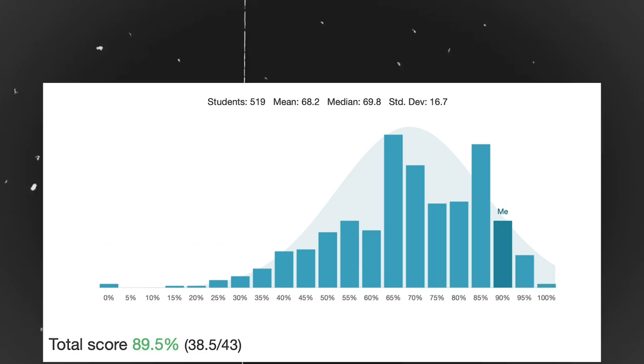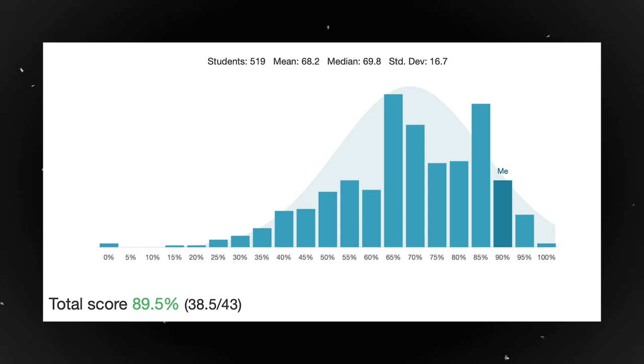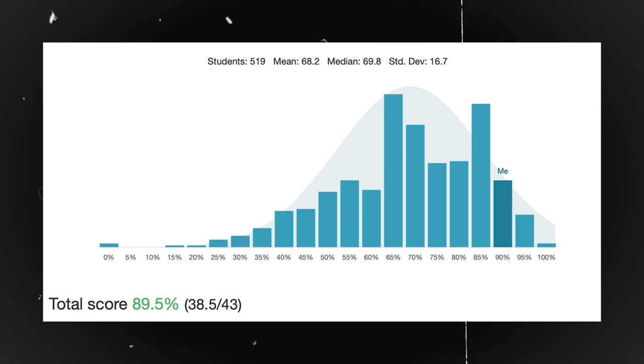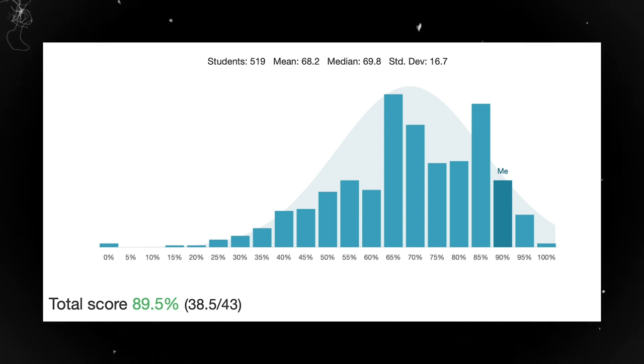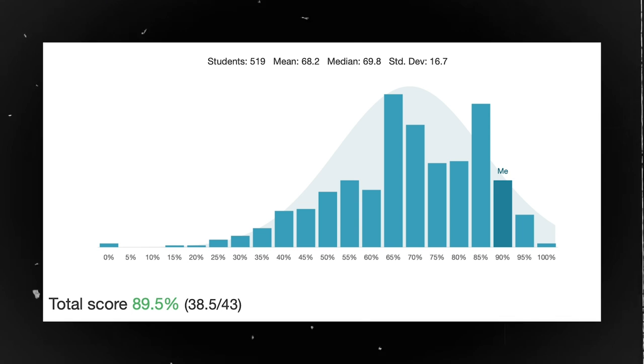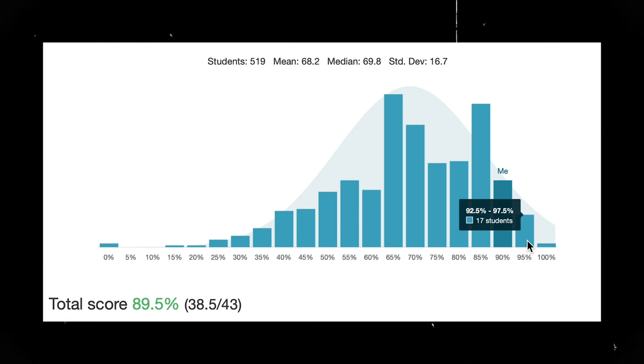Out of the 43 marks on the exam I got 38.5 out of 43 which roughly equates to 89.5 percent. The class average was around 68 percent and this is how other students in my class scored. As you can see most people score between 65 to 90 percent.